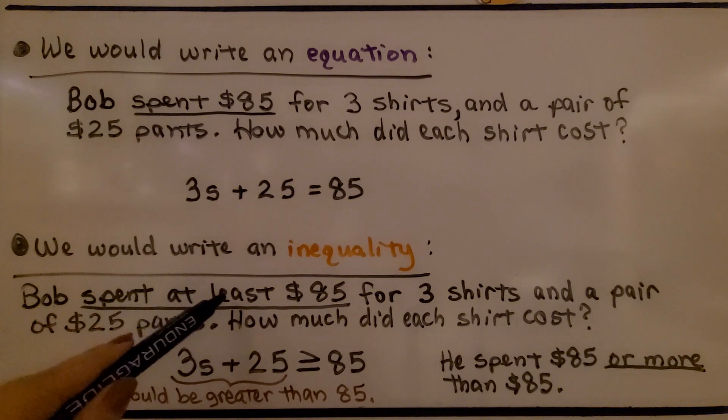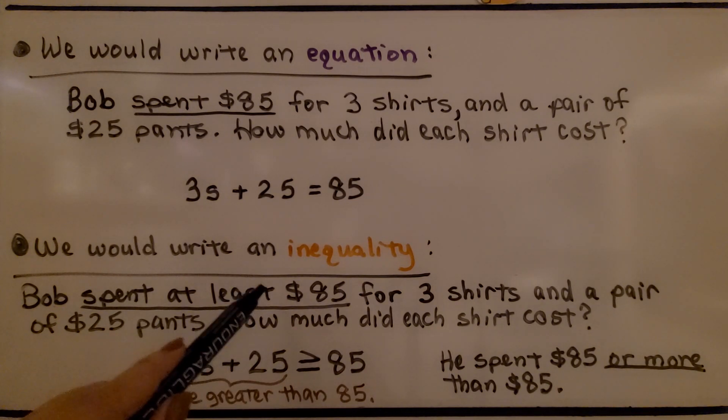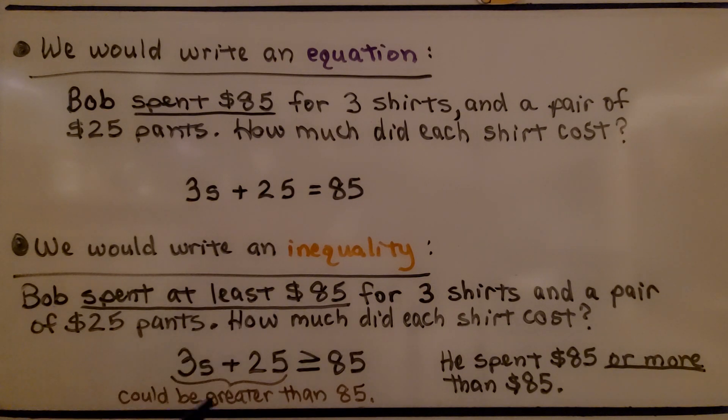Bob spent at least $85 for 3 shirts and a pair of $25 pants. How much did each shirt cost? So this side of the inequality could be greater than $85 because that's the least amount he spent. It could be greater than that. He spent $85 or more than $85.